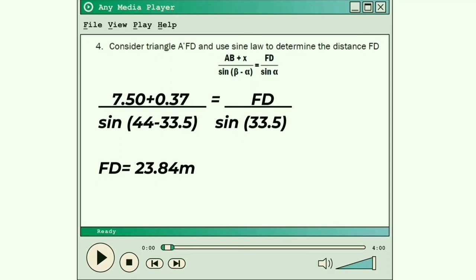Fourth, consider triangle AFT and use the sine law to determine the distance FT. The formula is: (AB plus X) over sine(β minus α) equals FT over sine α. After substituting the data, the answer is 23.84.